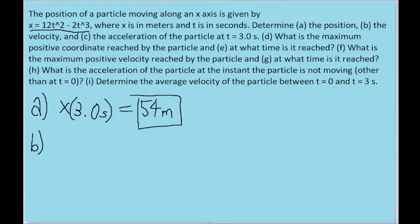Part B asks for the velocity at some point in time, the same point in time. We're not given a function for velocity, but since we have the function for position, we can find the function for velocity by using some calculus.